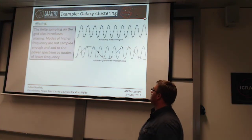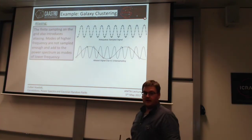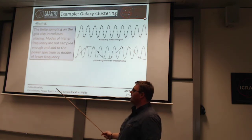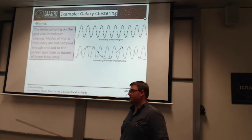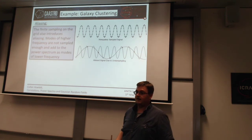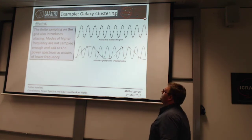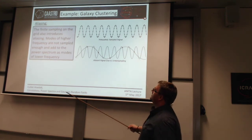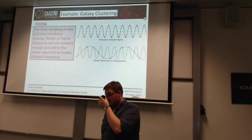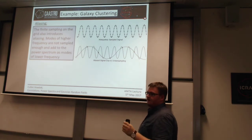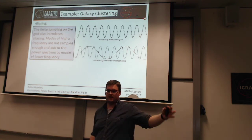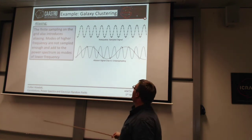Second is aliasing, which is discussed a lot in signal analysis and frequency analysis. You may have heard of it in the context of anti-aliasing of fonts. The reason this happens is because you've got a grid, so you can only sample down to the Nyquist frequency. If you then have Fourier modes of higher frequency, you can't sample them properly and they end up looking like lower frequency modes.